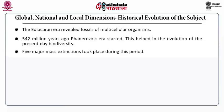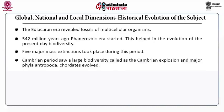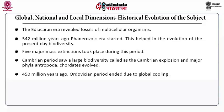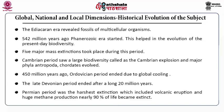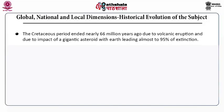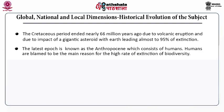Five major mass extinctions took place during this period. The largest biodiversity was seen during the Cambrian period and it was defined as the Cambrian explosion. During the Cambrian period, major phyla including Arthropoda and Chordata evolved. The Ordovician period was reported around 450 million years ago due to global cooling. The late Devonian period ended after a long 20 million years. The Permian period was the harshest extinction, which included volcanic eruptions and huge methane production, and nearly 90% of life became extinct. Thereafter, the Cretaceous period ended nearly 66 million years ago due to volcanic eruptions and the impact of a gigantic asteroid with Earth, leading to almost 95% extinction.